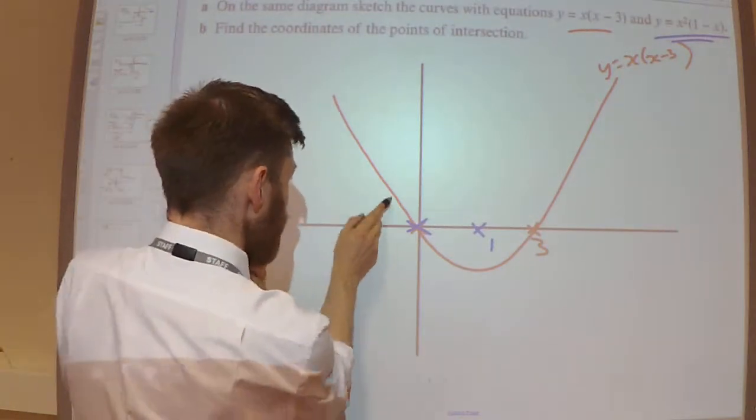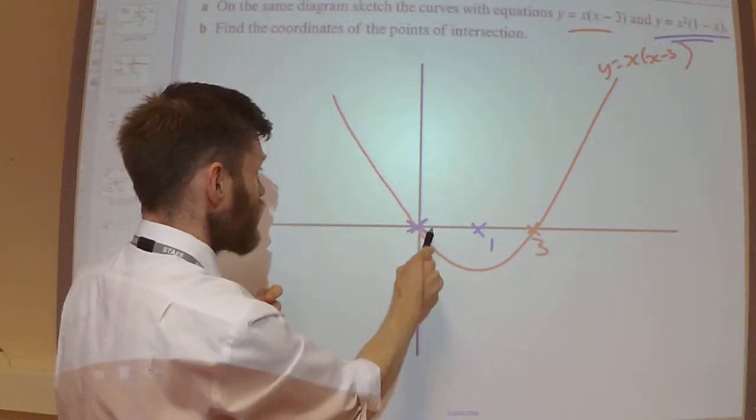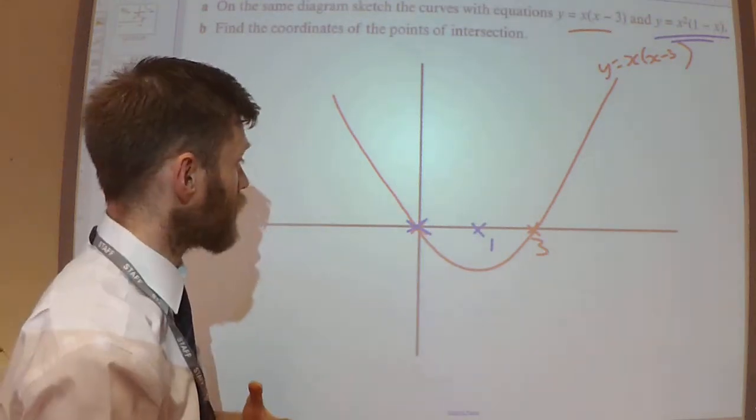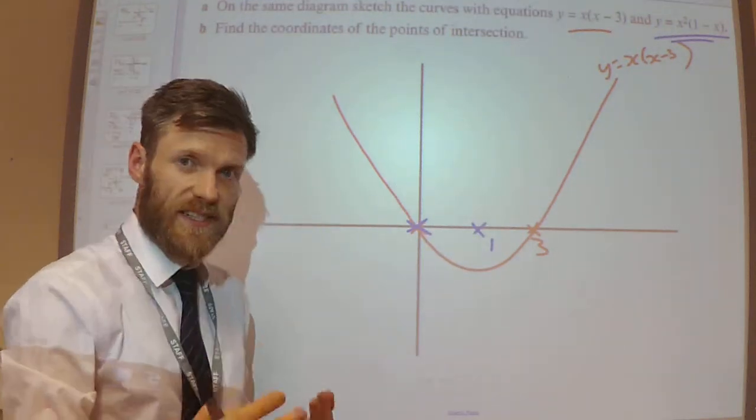So I know it's going to look something like this. The key thing I need to think about is what's going to happen over here. Is it going to be above the red line? Is it going to go below the red line? Or are they going to cross over at some point?